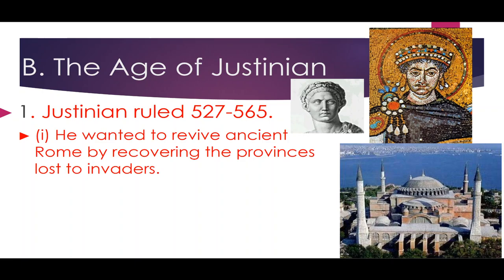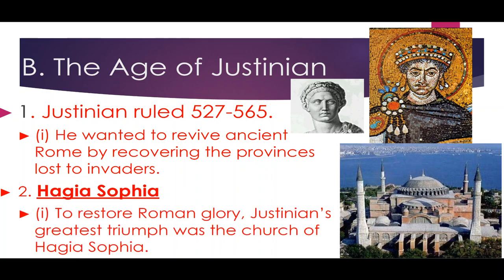Like most emperors, Justinian wanted to revive his ancient city — to recover lands lost to invaders and continue growing the Byzantine Empire. He saw himself as the Roman Emperor and wanted to make Rome what it once was. One of his biggest achievements was creating the Hagia Sophia, a church dedicated to God to demonstrate the power of Constantinople. Today it is still architecturally one of the greatest treasures in the world.